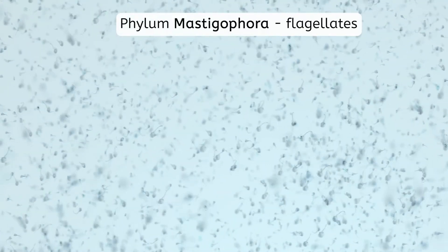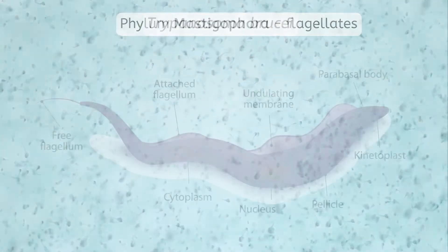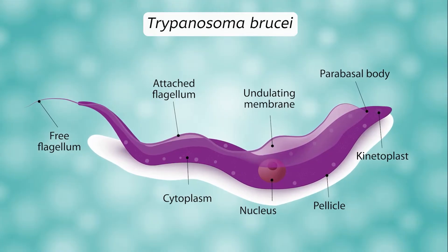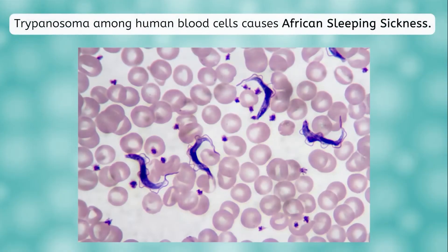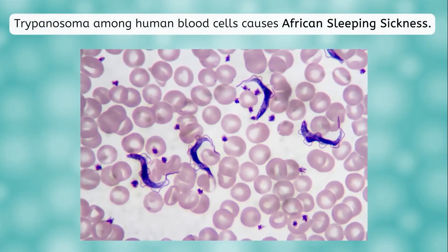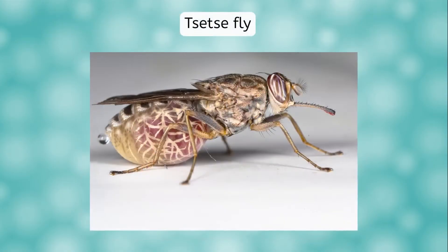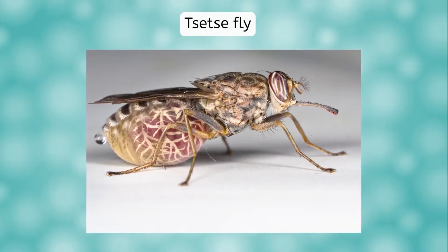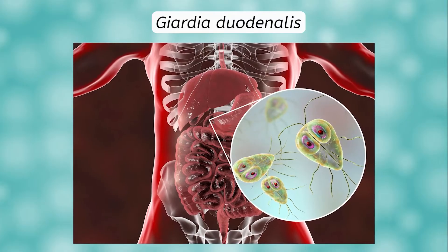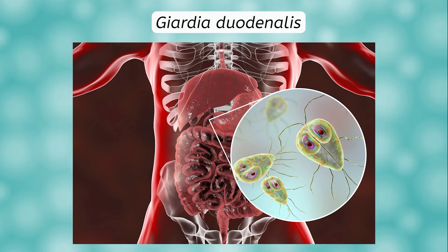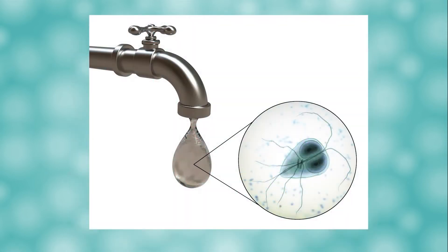Phylum Mastigophora, known as the flagellates, swim using a flagella. One of the most well-known flagellates, Trypanosoma brucei, causes the disease African sleeping sickness. It's transferred from person to person via the tsetse fly and is often fatal if left untreated. A less severe, though unpleasant, intestinal disease is caused by the flagellate Giardia duodenalis. You can be infected with this little parasite if you consume contaminated drinking water.